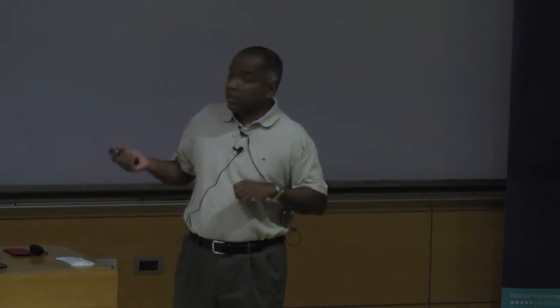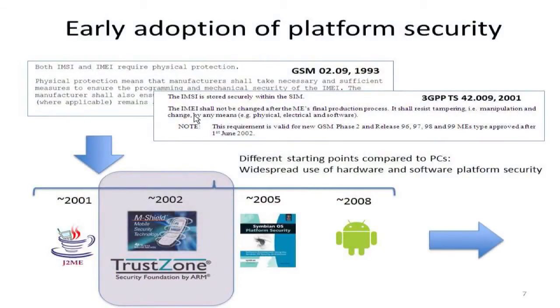Platform security software architecture means that ordinary users can install different applications, but unlike on a PC, they don't all run with the same privileges — different applications get different privileges based on criteria such as who the developer is. There was also hardware support, starting about 10 to 12 years ago. The first was called M-Shield, a product from Texas Instruments jointly developed with Nokia. A couple of years later, ARM — the company that designs the core running in pretty much all smartphones — came up with an architecture called TrustZone.